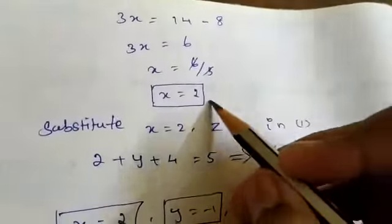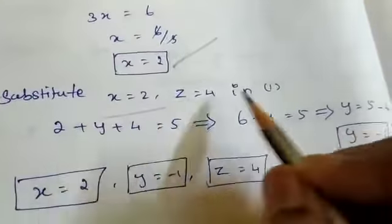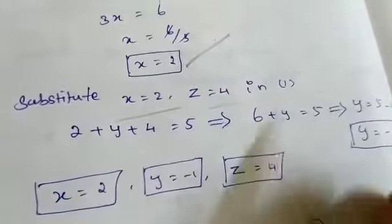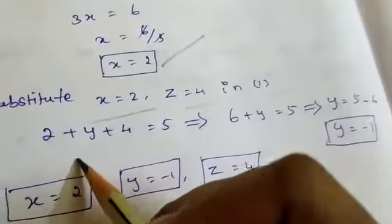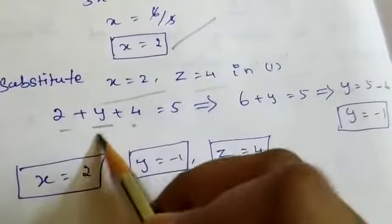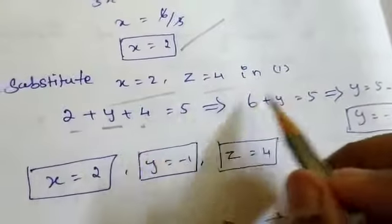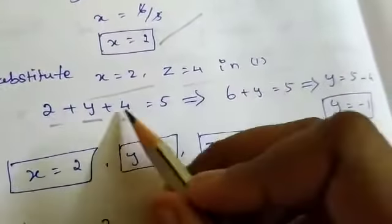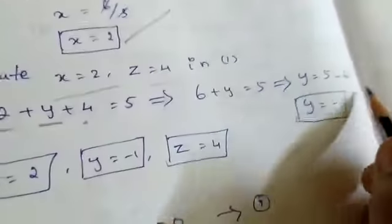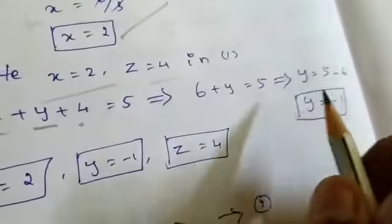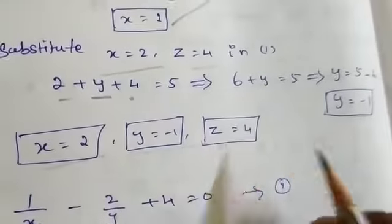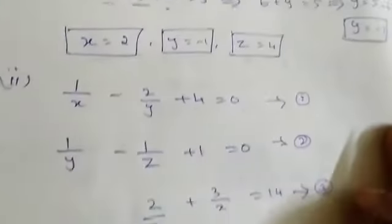We have got x equal to 2. Now substitute x equal to 2 and z equal to 4 in equation number 1. You will have 2 and 4 substituted, and solve for y. So y equal to 5 minus 6 which is minus 1. Therefore x equal to 2, y equal to minus 1, and z equal to 4.